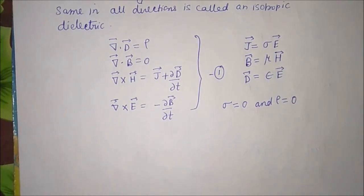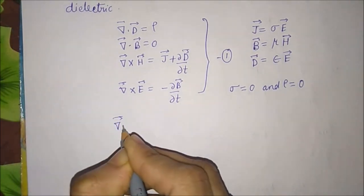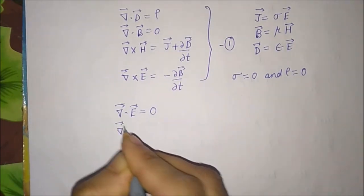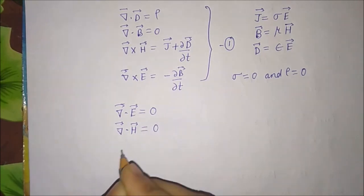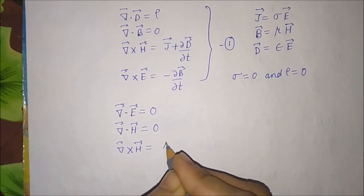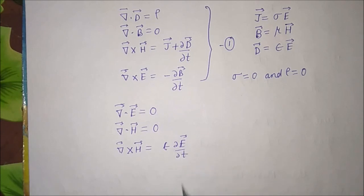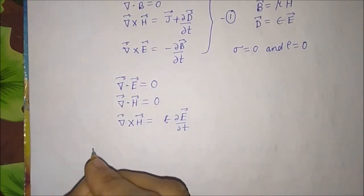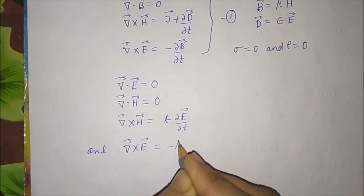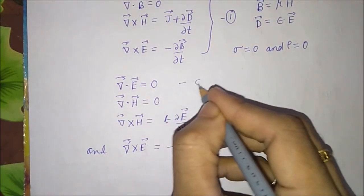Maxwell's equations reduce to: del dot E equal to zero (equation a), del dot H equal to zero (equation b), curl of H equal to epsilon ∂E/∂t (equation c), and curl of E equal to minus mu ∂H/∂t (equation d). These are equation number two.